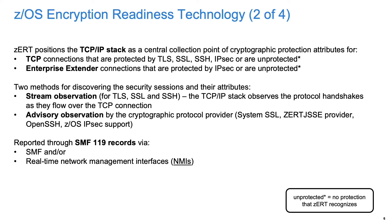The second way the stack learns information is from the cryptographic protocol provider protecting the connection. When the protocol provider is aware of ZERT, it calls ZERT and provides additional information the stack is unable to absorb from observation alone — things like certificate information, or when there is a change in protection halfway through the connection. The protocol providers that are aware of ZERT are SystemSSL, ZERTJSSE, OpenSSH, and IPsec. The information is collected in memory and can be reported through SMF-119 records, written to the System Management Facility, SMF, or the Real-Time Network Management Interface, NMI, provided by ZOS Communications Server.